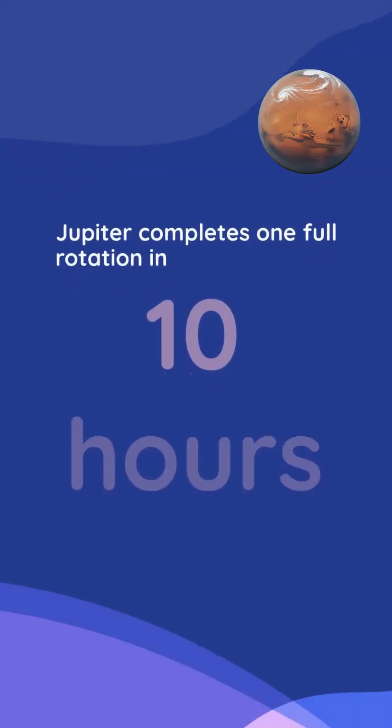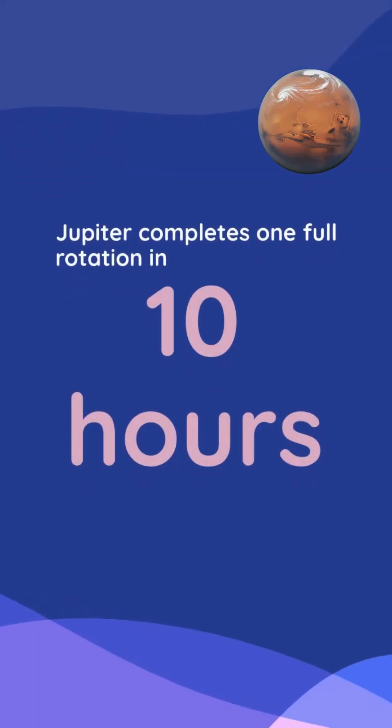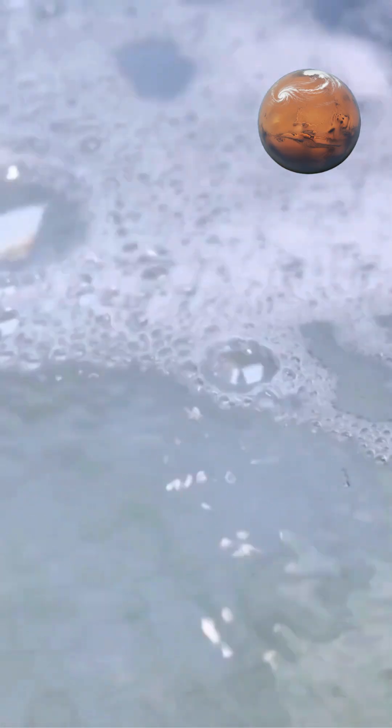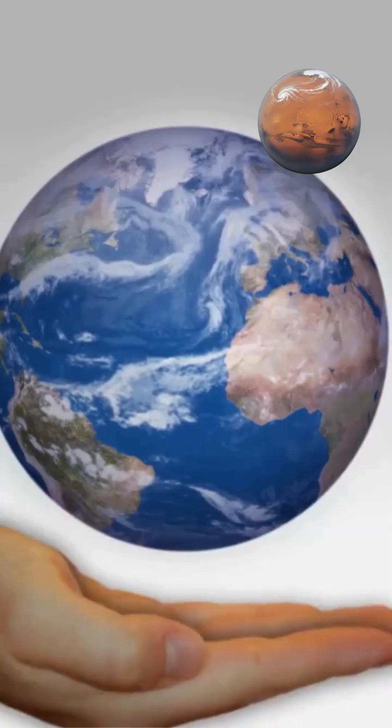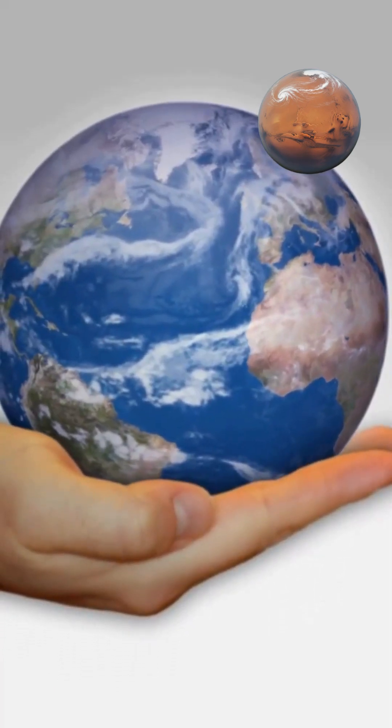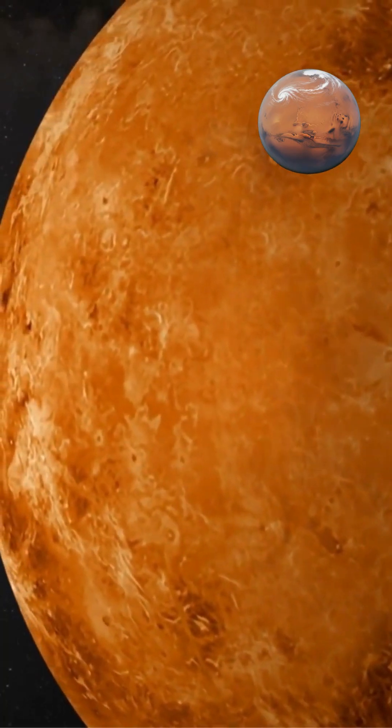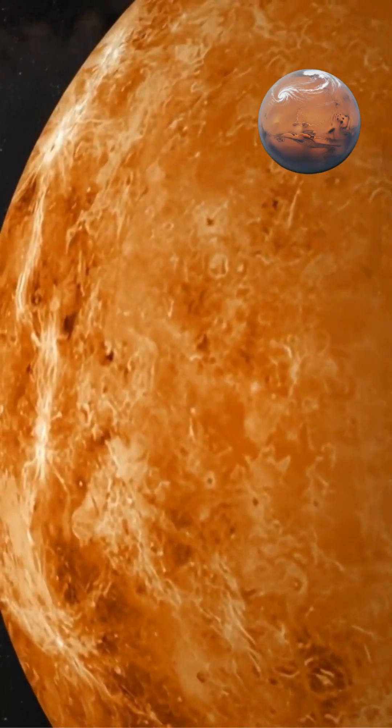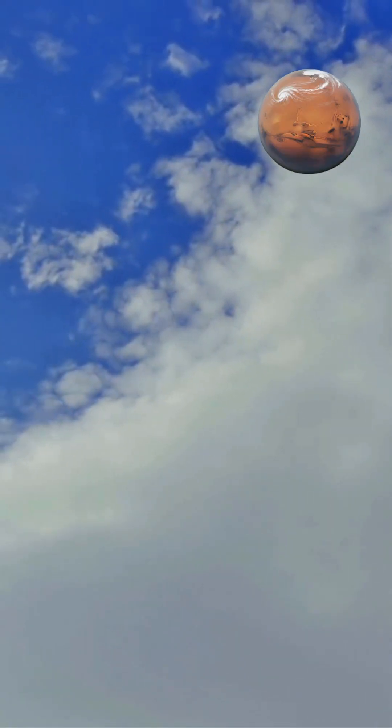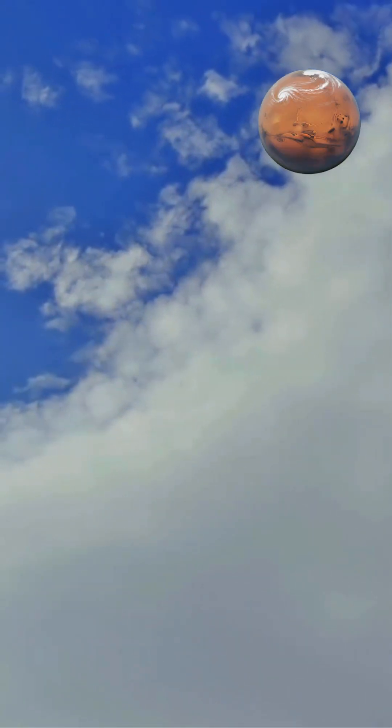Jupiter rotates extremely fast, completing one full rotation in just 10 hours. This rapid spinning creates powerful centrifugal forces that flatten the planet at its poles. More importantly, the rotation causes atmospheric gases to organize into distinct latitudinal bands moving at different speeds.